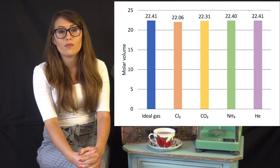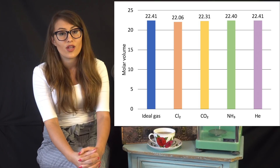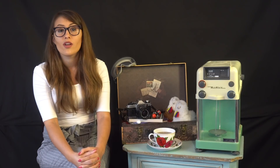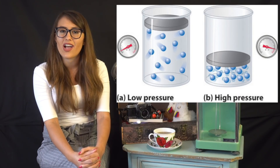It is important to point out that gases do not always act similar to that of ideal gases. Real gases deviate from ideality at high pressures or low temperatures. The reason being is that at high pressures, the space that gases occupy is notable.